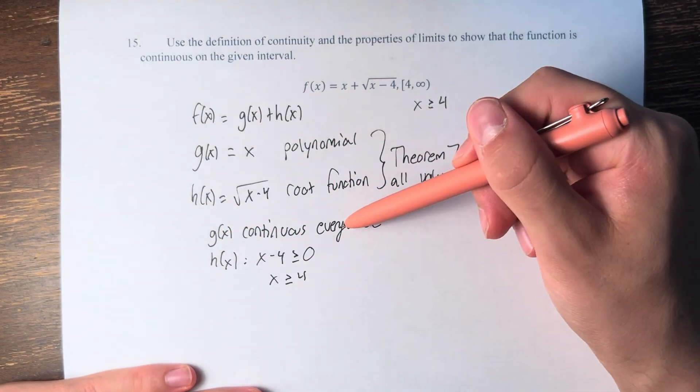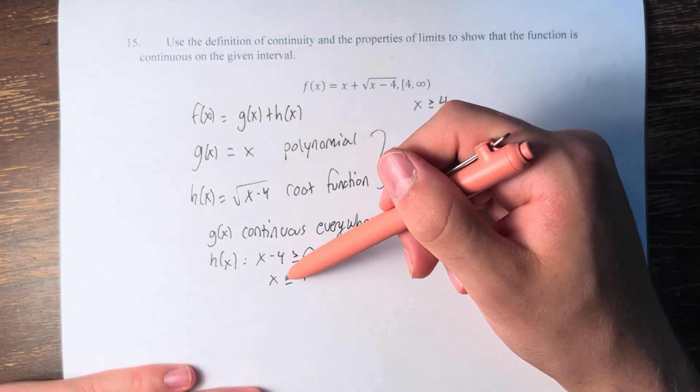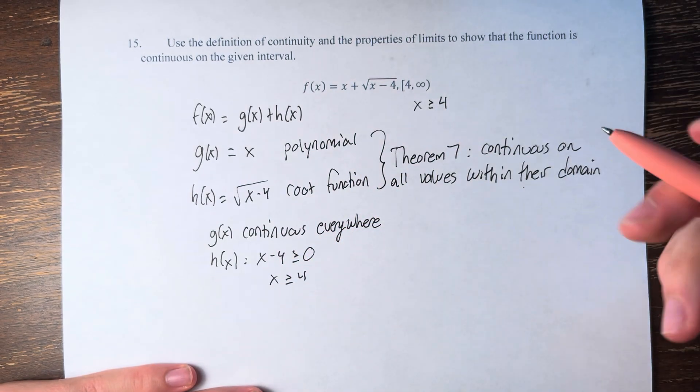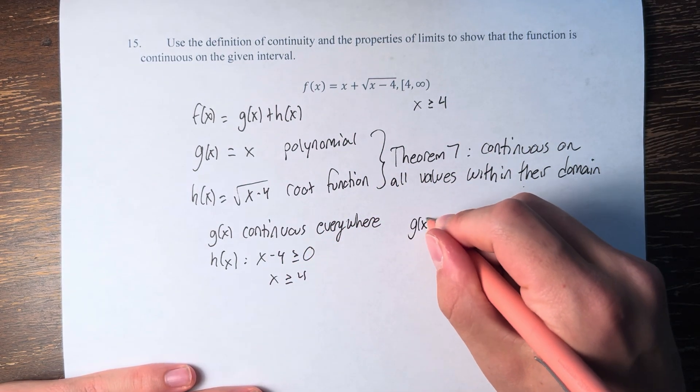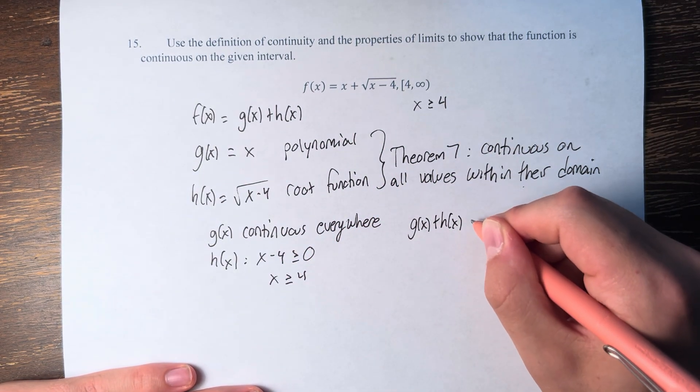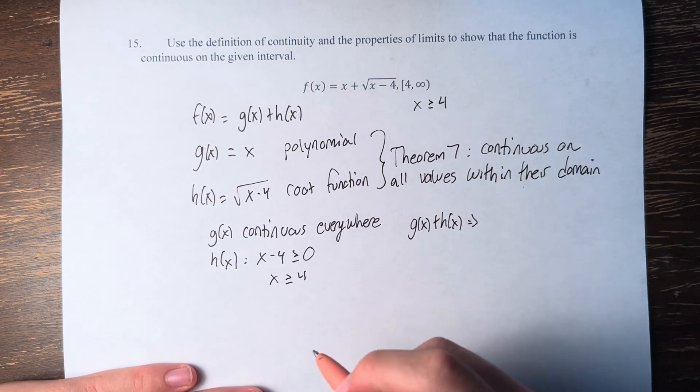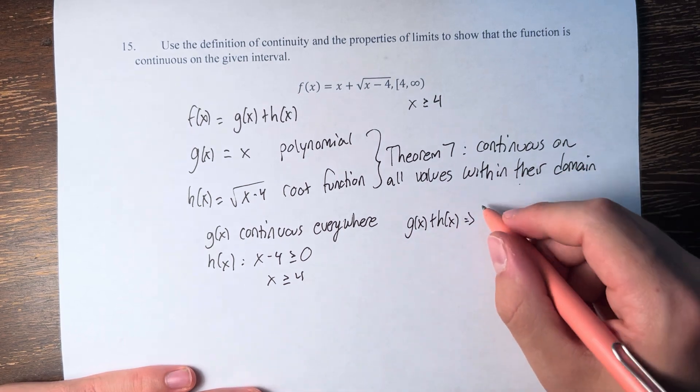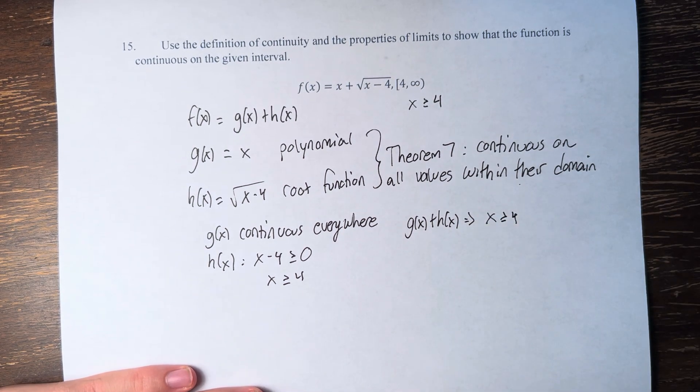So if g of x is continuous everywhere and h of x is, x must be greater than or equal to 4, therefore the restriction for g of x plus h of x is that it has to be in the domain of g and h. g doesn't restrict anything, h has one restriction, so that's the only restriction: x is greater than or equal to 4.